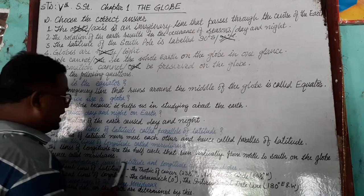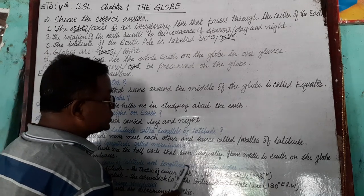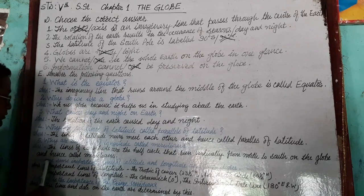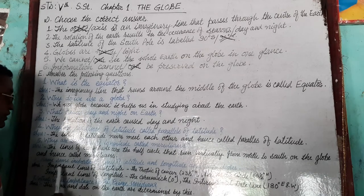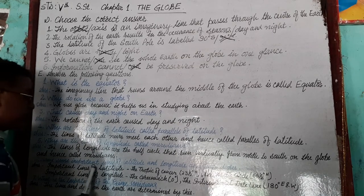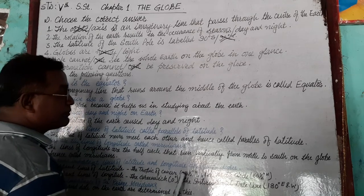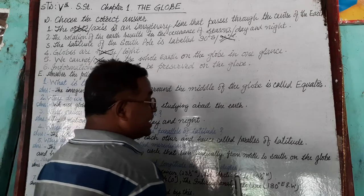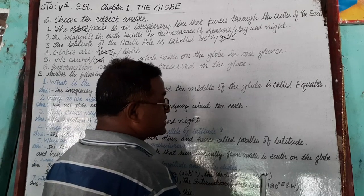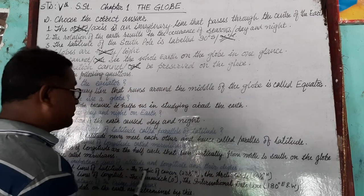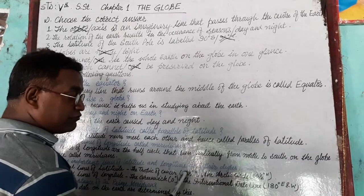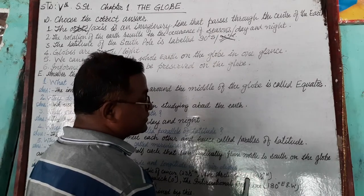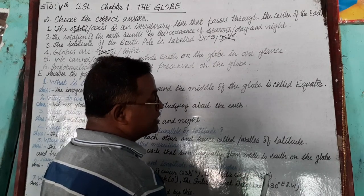Name some important lines of latitude and longitude and their degrees. Important lines of latitude: the Tropic of Cancer at 23 and a half degrees north latitude, the Arctic Circle at 66 and a half degrees north latitude, the Tropic of Capricorn at 23 and a half degrees south, and the Antarctic Circle at 66 and a half degrees south.